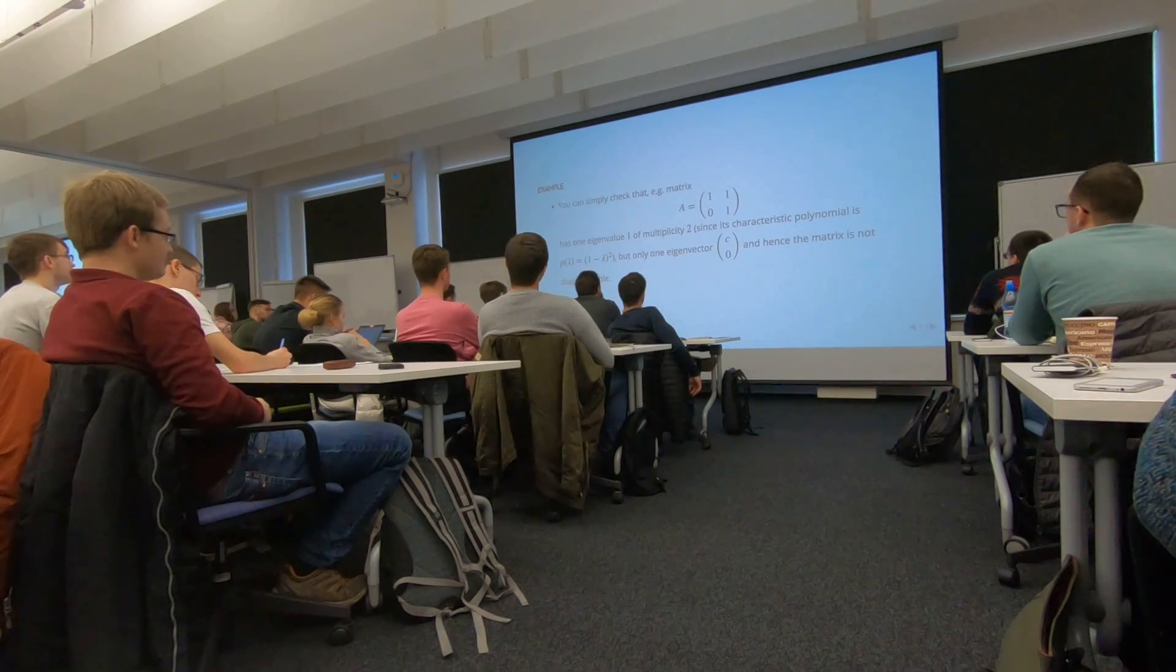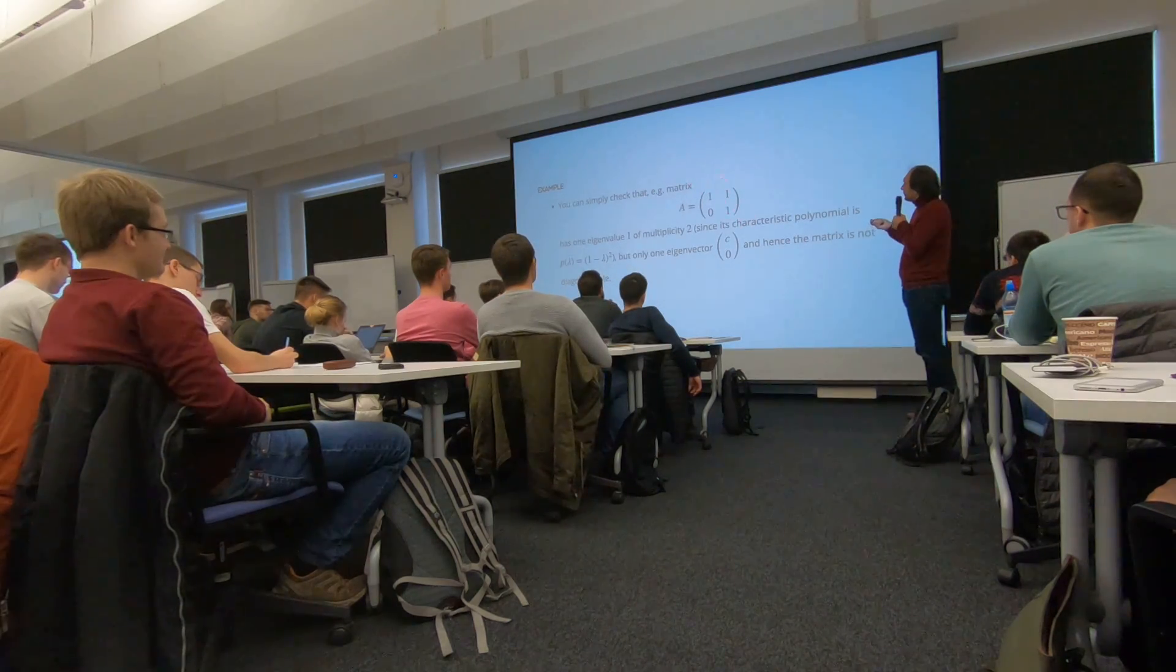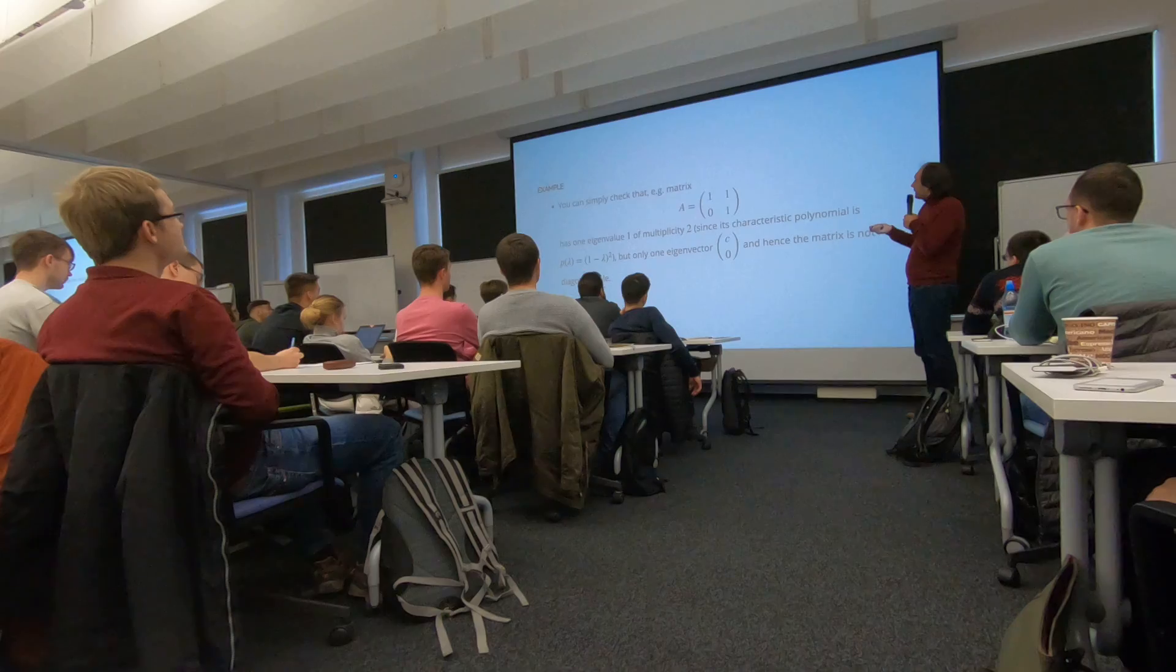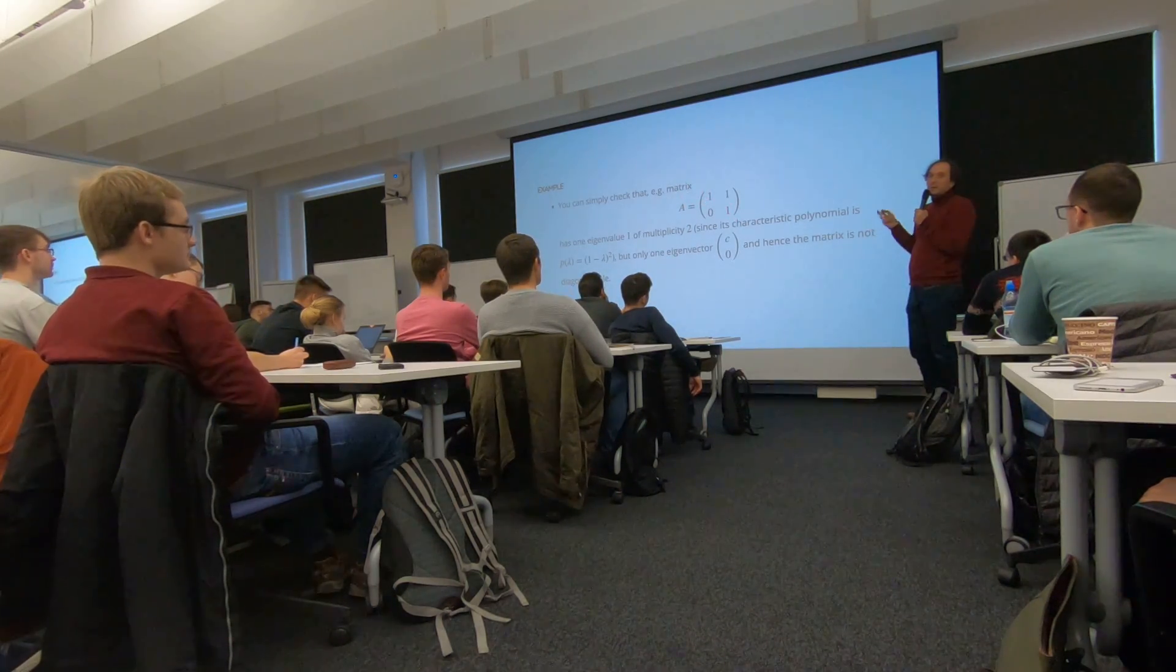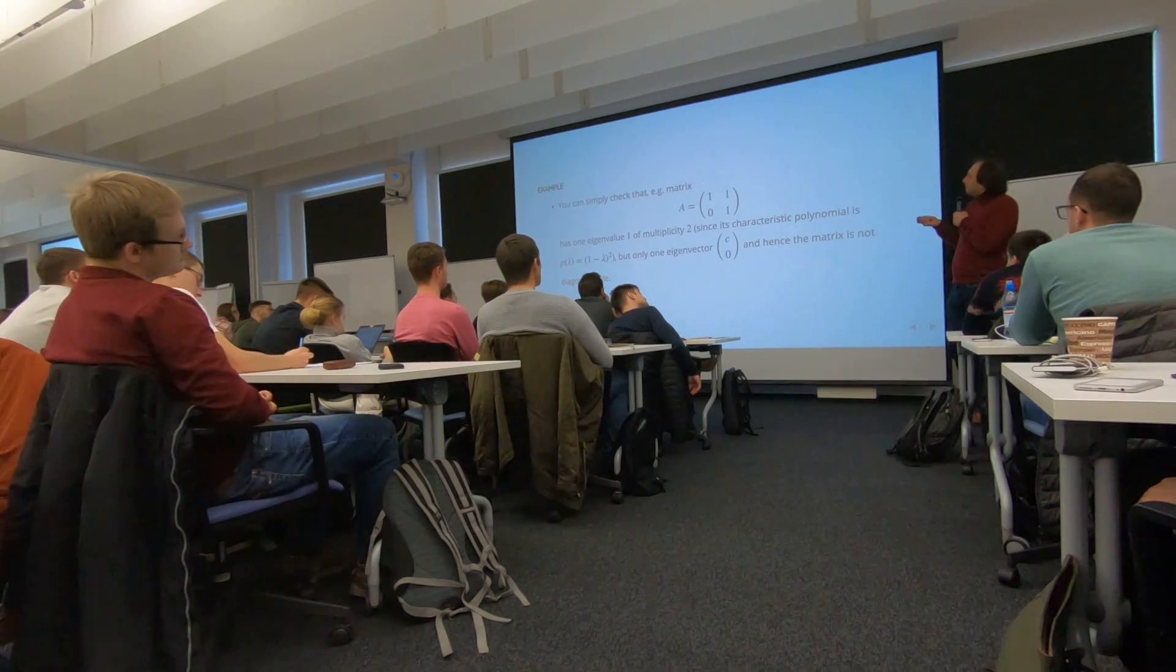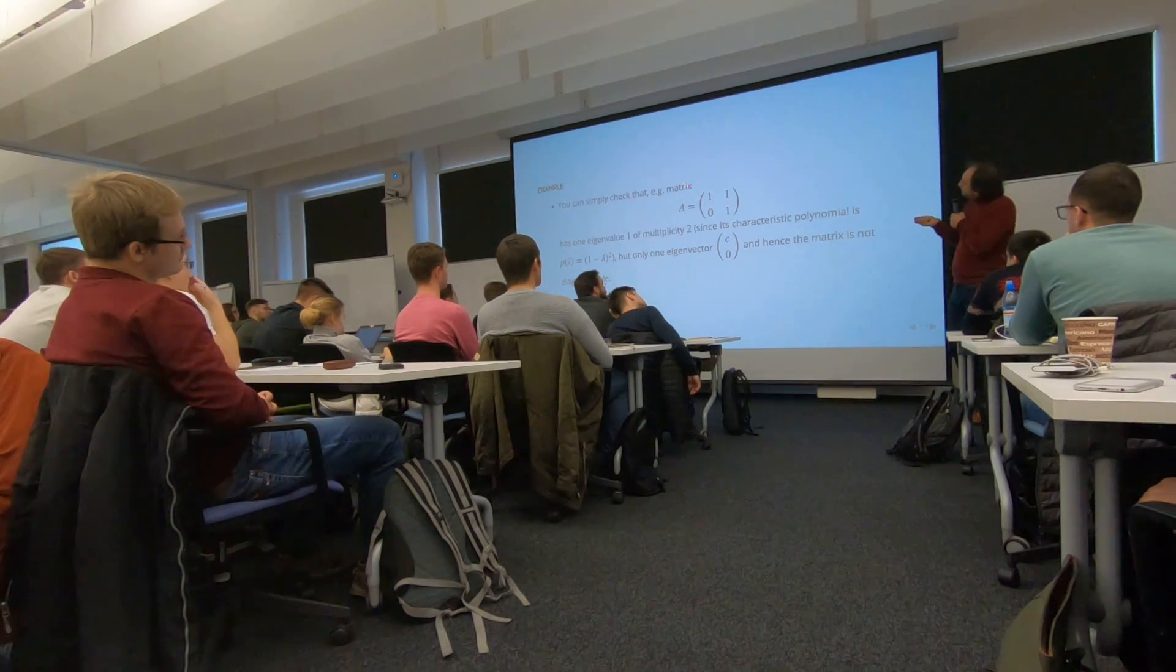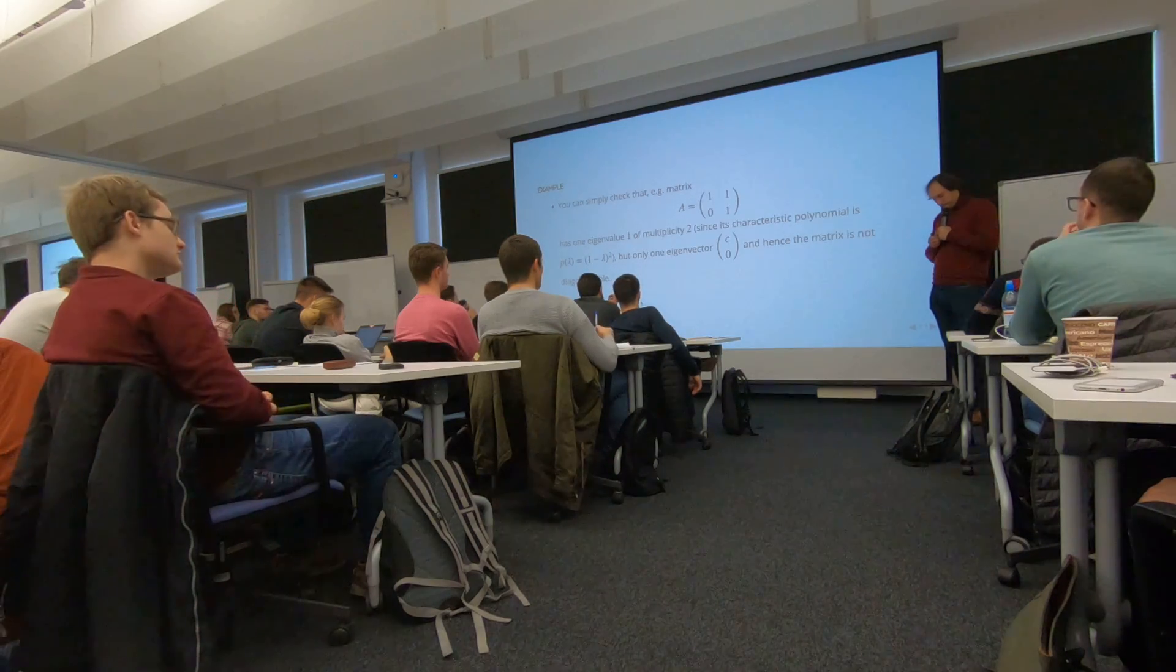So one example of non-diagonalizable matrix is the example of this Jordan block, where you have this triangular matrix with the same values on the diagonal, so two eigenvalues, so-called triangular. If you have triangular matrices, actually, eigenvalues are easy to compute. If you have a triangular matrix, then all the eigenvalues will get back to it later on. For the triangular matrix, eigenvalues are located on the diagonal.